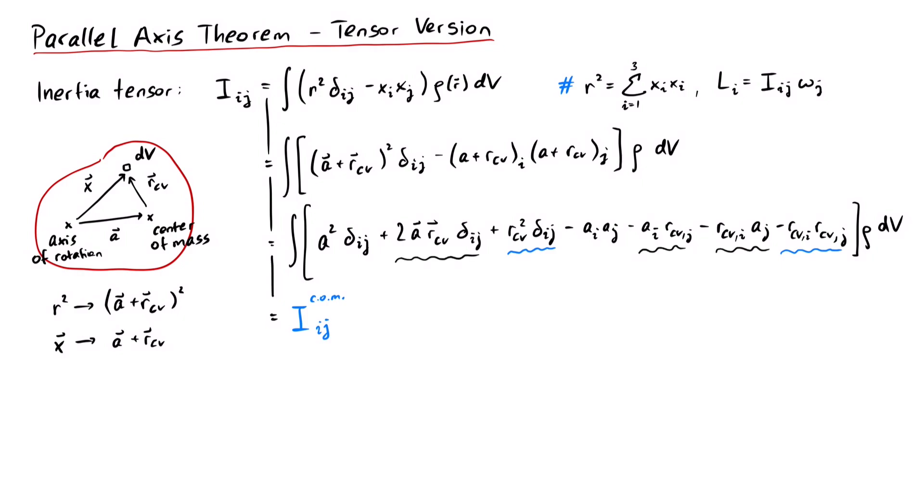For these three terms, we can recognize the definition of the center of mass position. But since the origin of the coordinate system for r-cv already lies on the center of mass, this would yield a vector 0, 0, 0. Therefore, all these terms vanish.